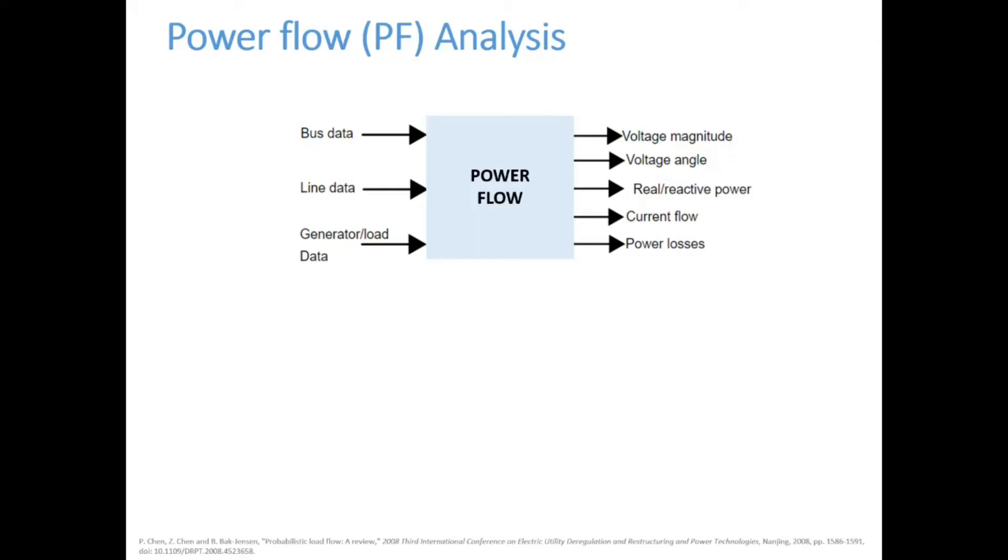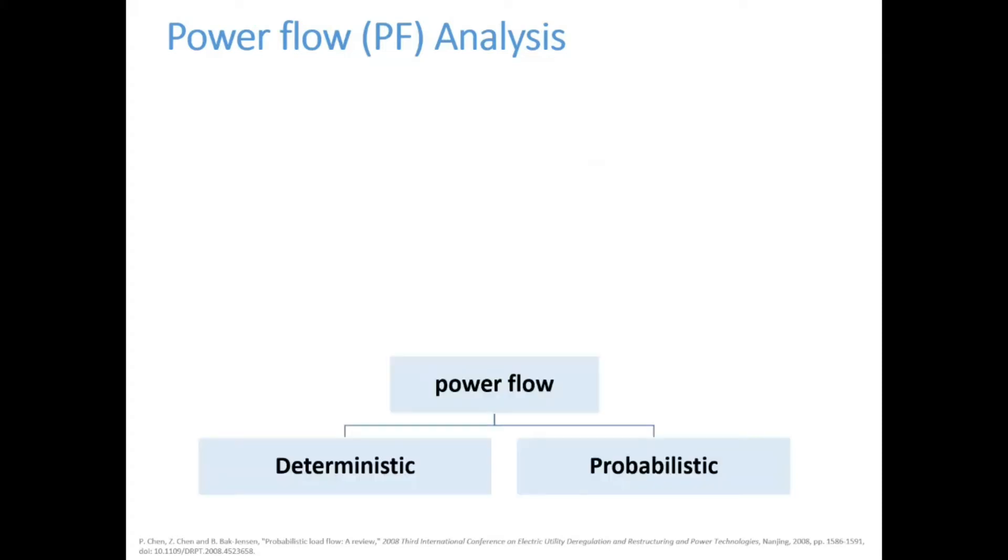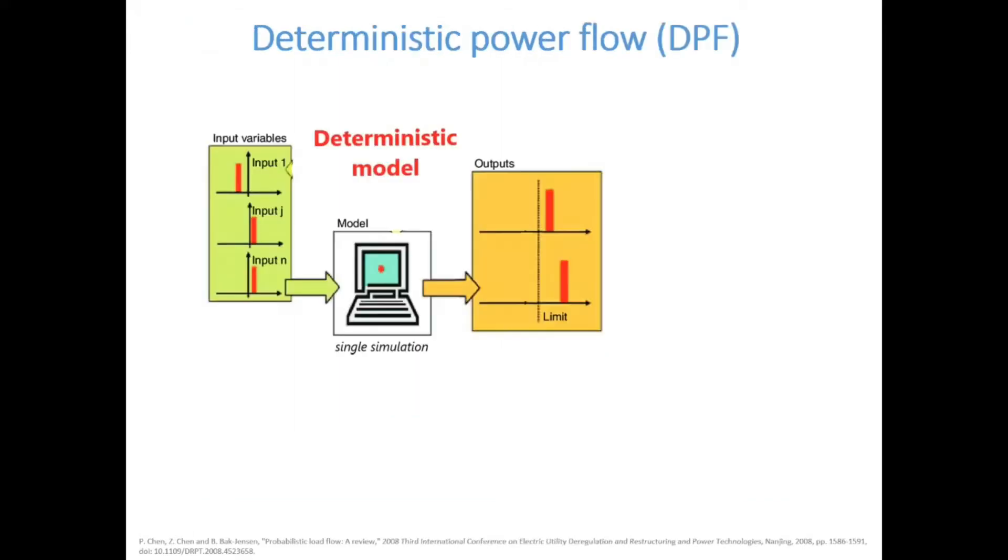The power flow product can be categorized into the deterministic power flow and the probabilistic power flow. Traditionally, the deterministic power flow has been used to analyze and assess the planning and operation of power systems. It uses specific values of power generations and load demands to calculate the bus voltages and power flows.